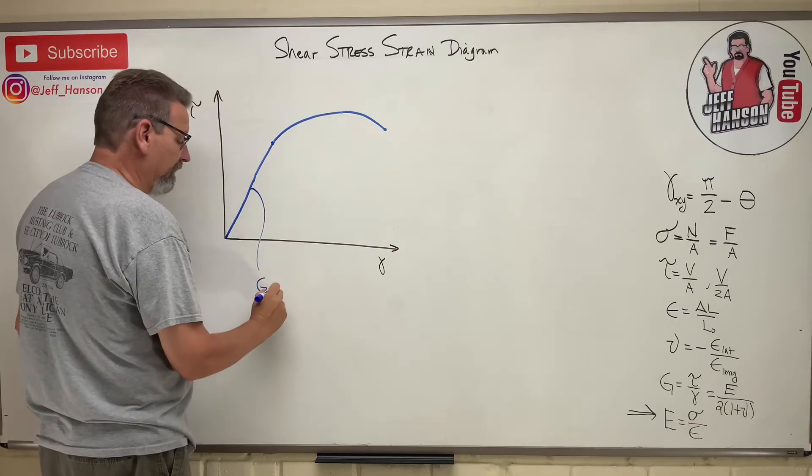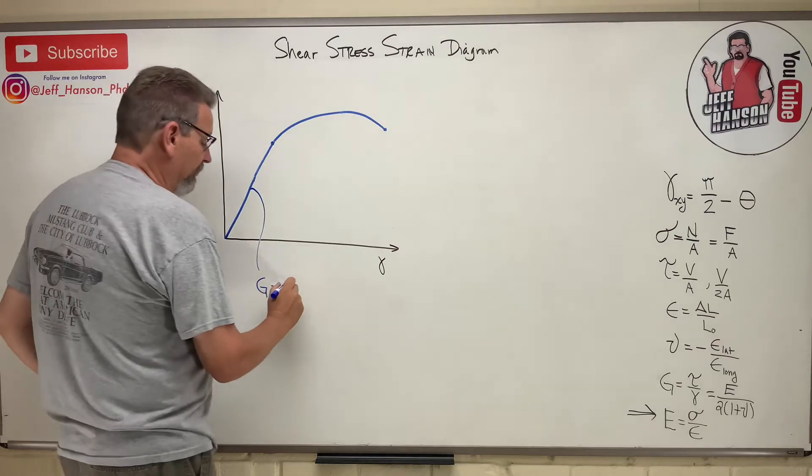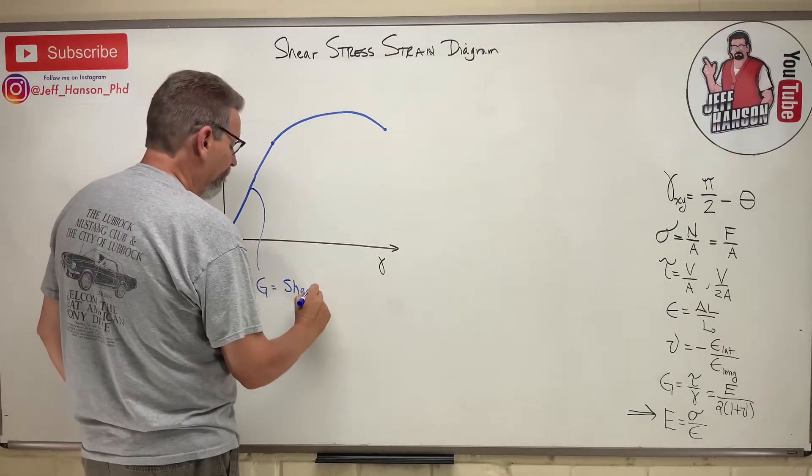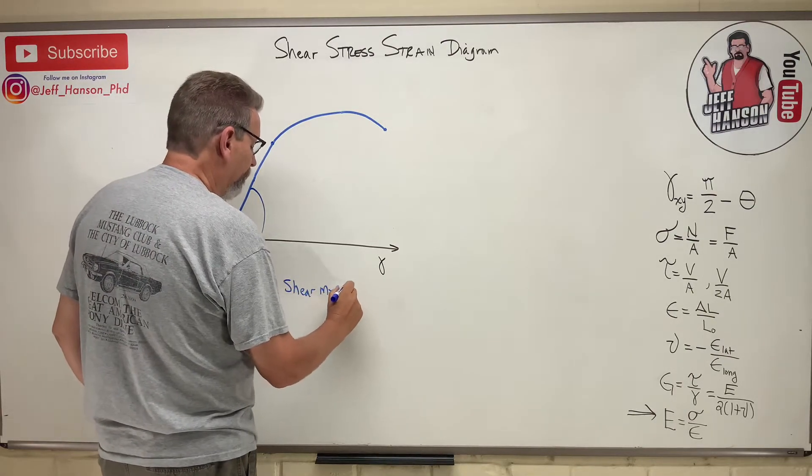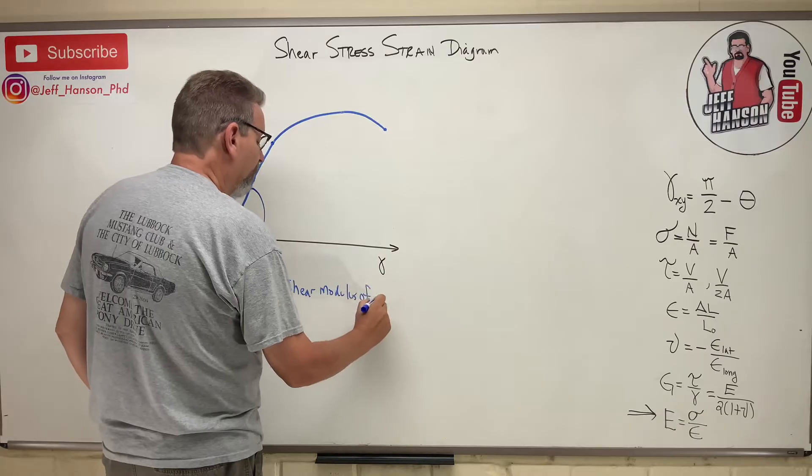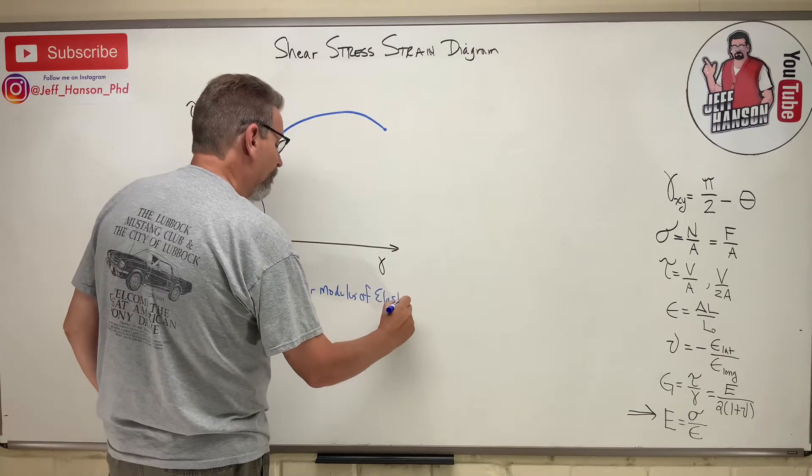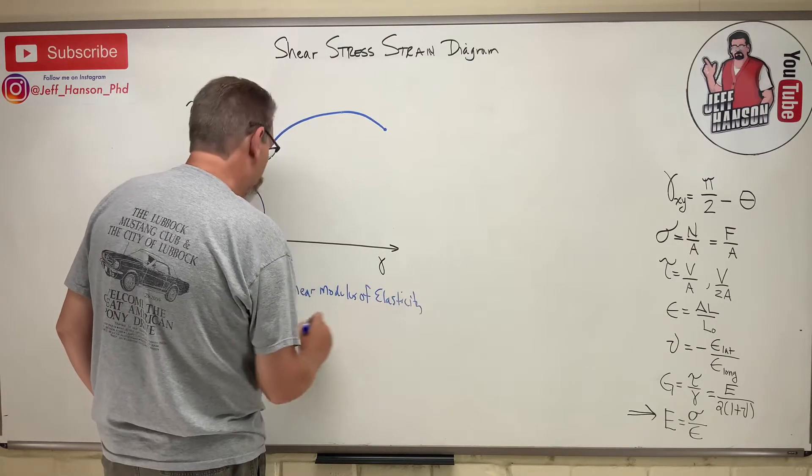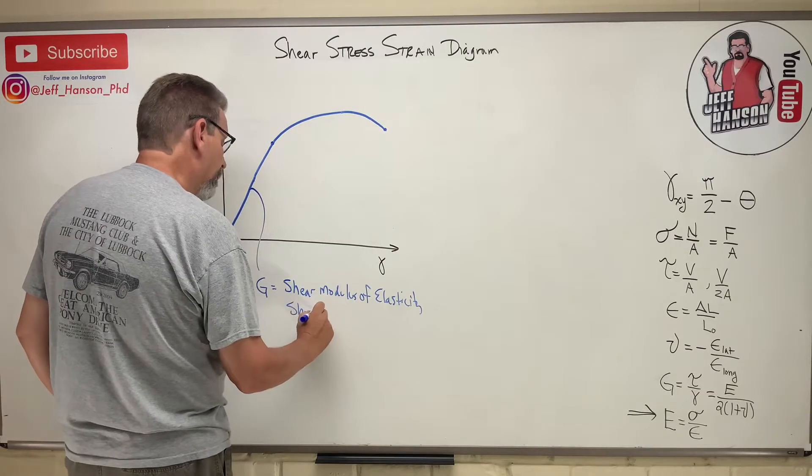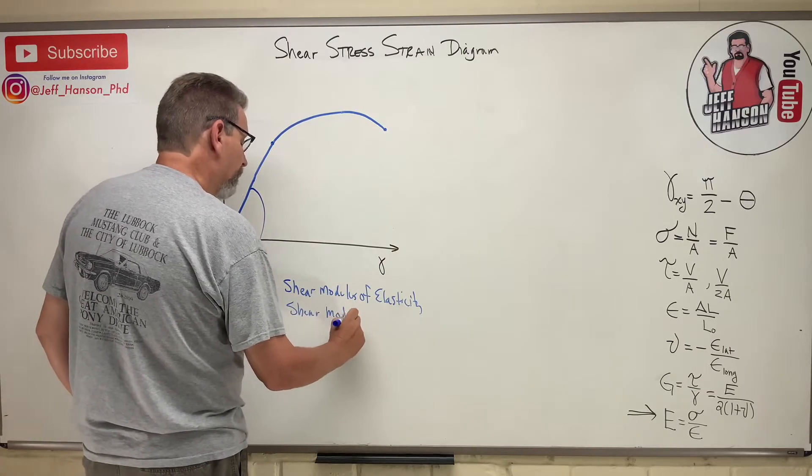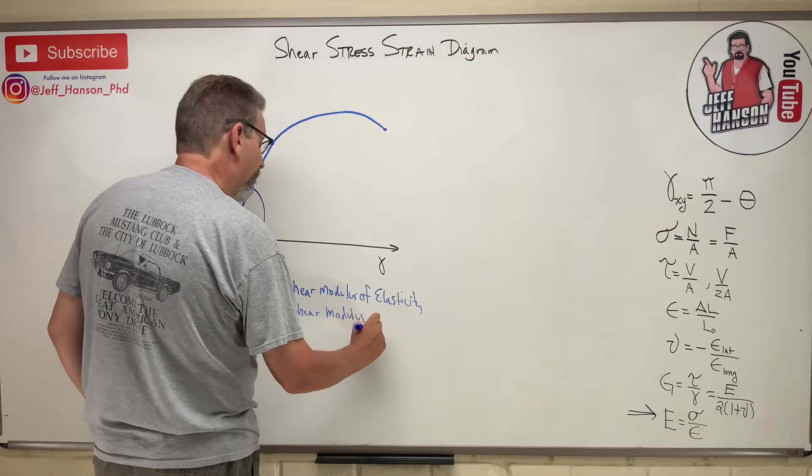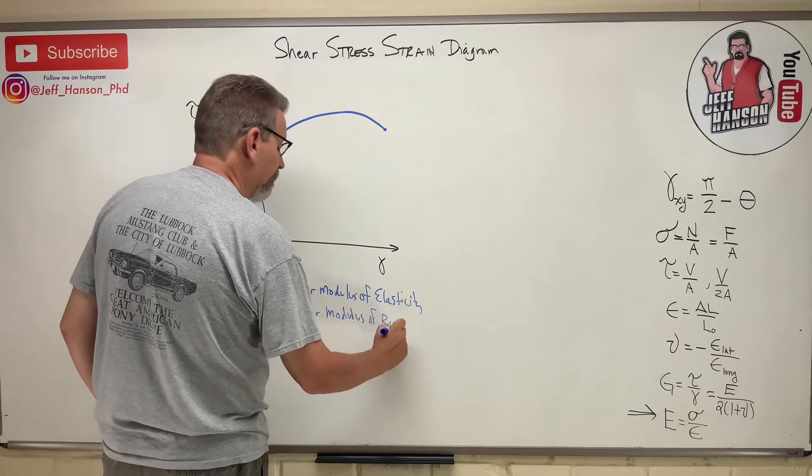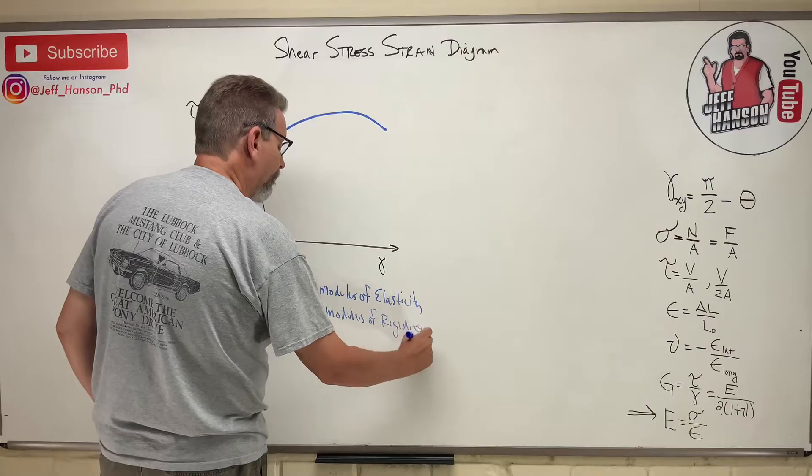And we use this, this is called G, which is called the shear modulus of elasticity, or the shear modulus of rigidity. Either one of those, you'll see it called either one of these, they're the same thing.